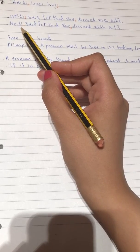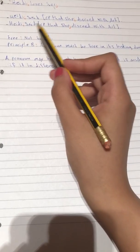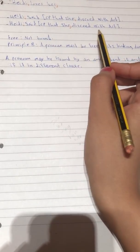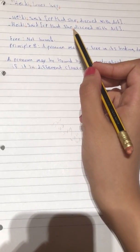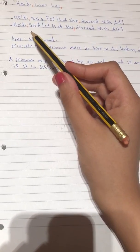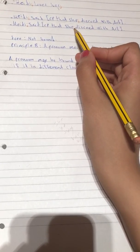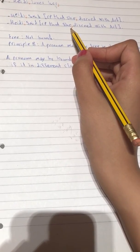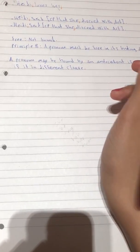But here, Heidi said that she discussed with Art. She refers to someone else not Heidi itself because we have J which means different or refers to someone else.